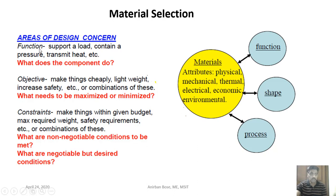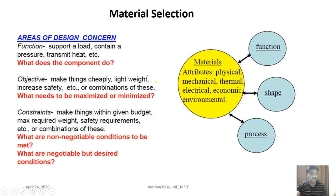The function of a particular component includes: supporting a load, containing a pressure (as in a pressure vessel), or transmitting heat (as in a condenser tube). In the case of a machine component or structural member, it will take a certain load — tensile or compressive. These are the different functional requirements that the material and component must satisfy.